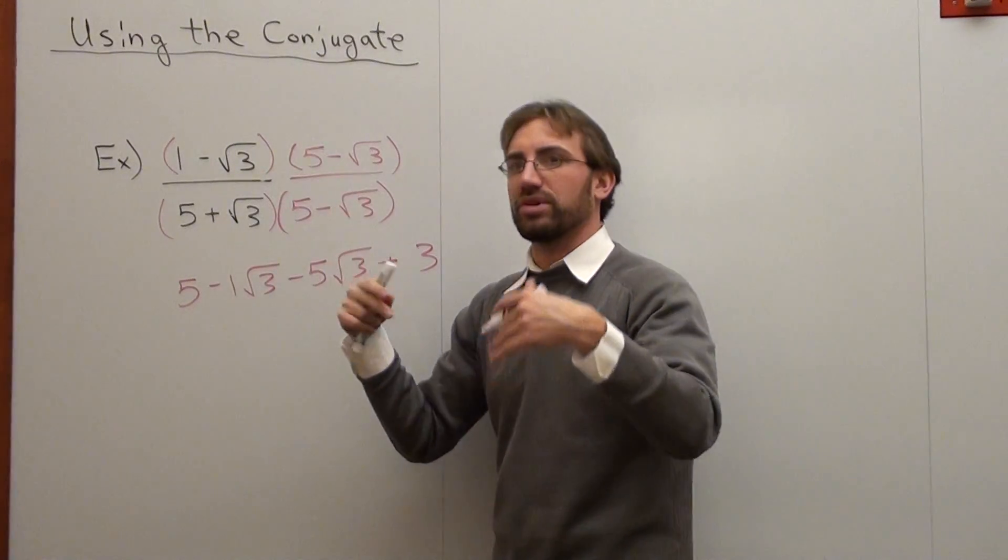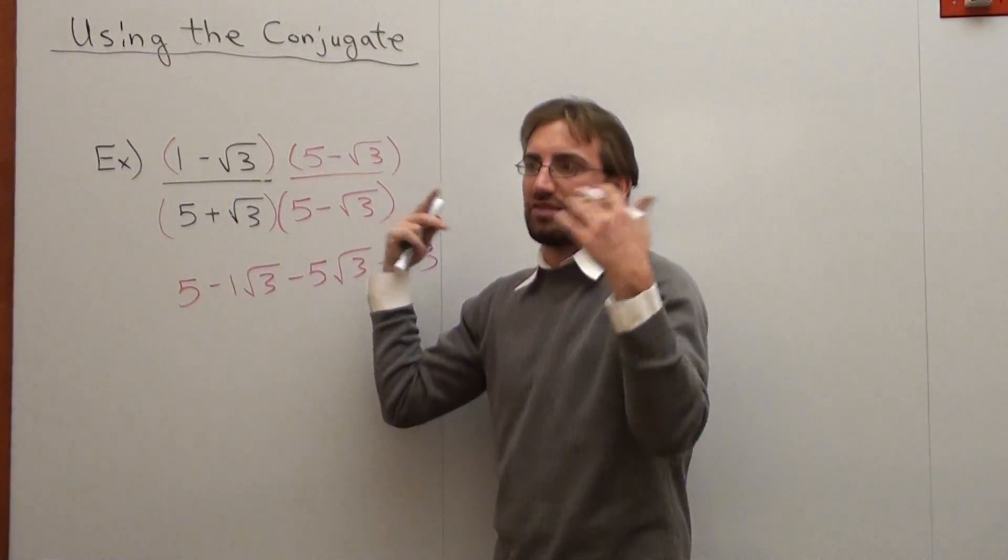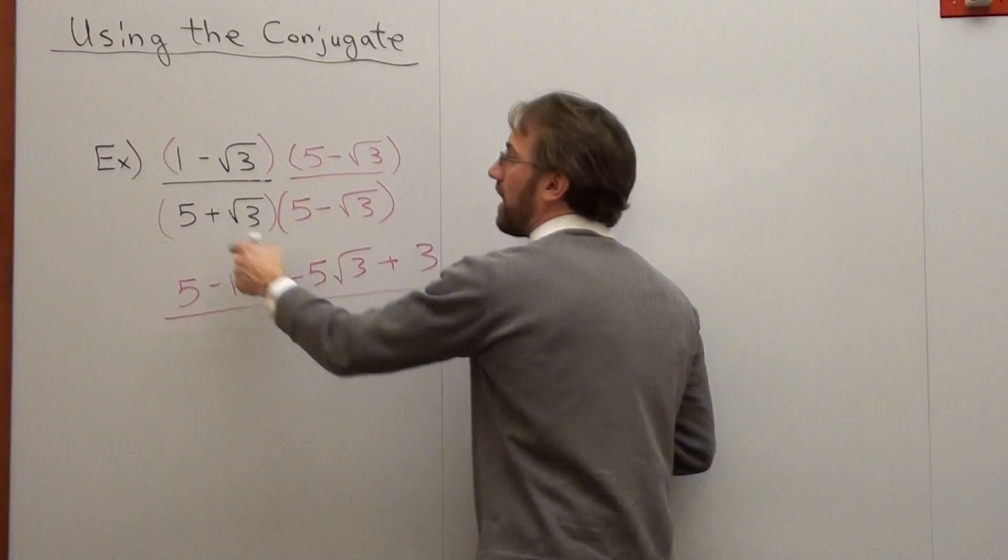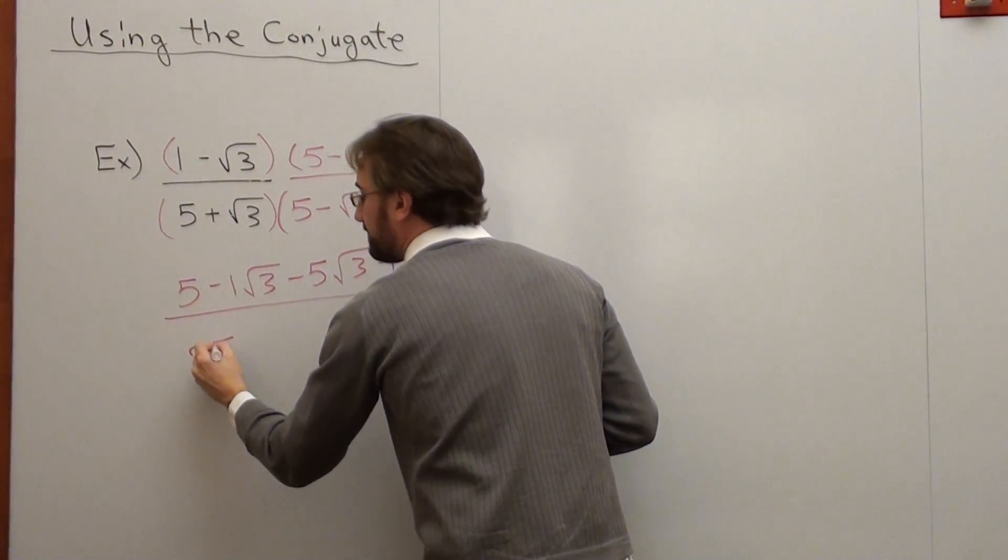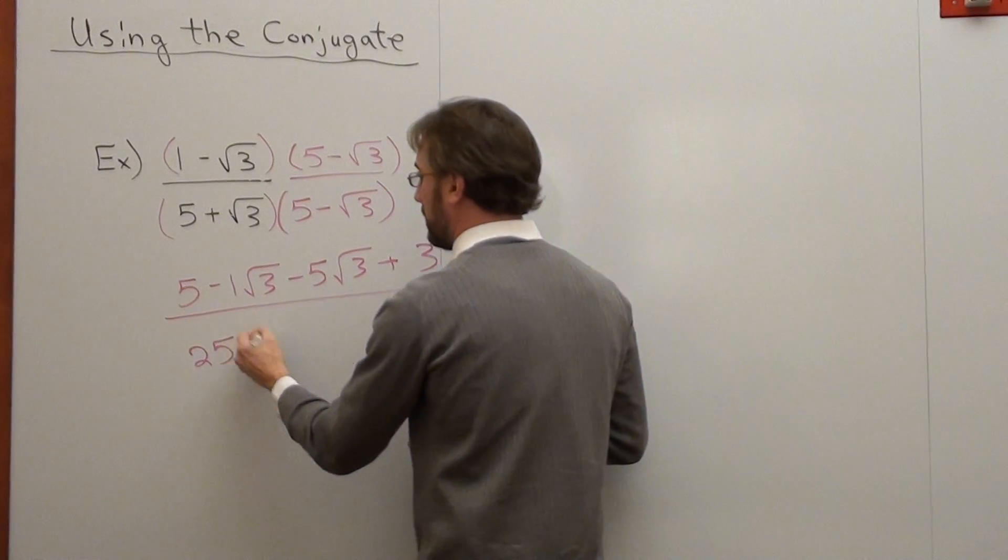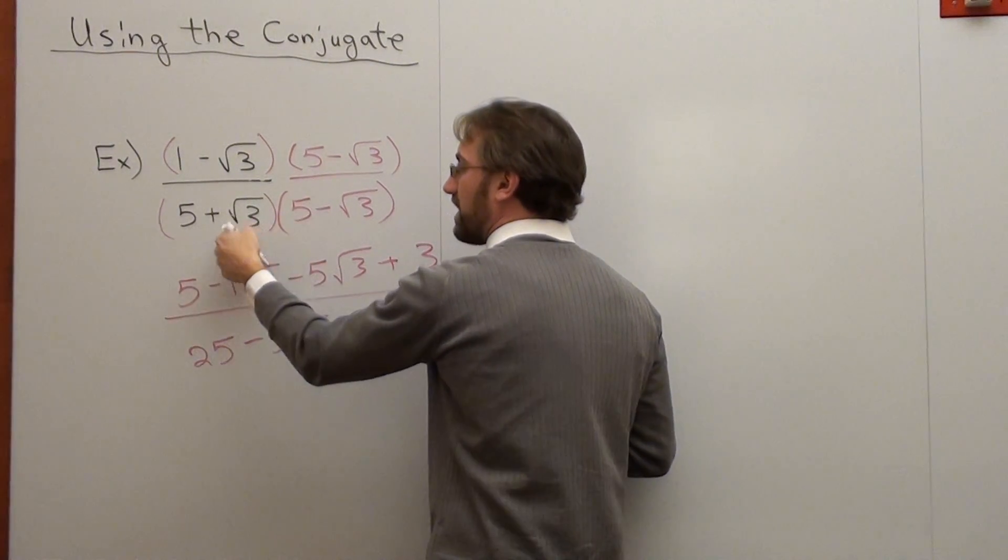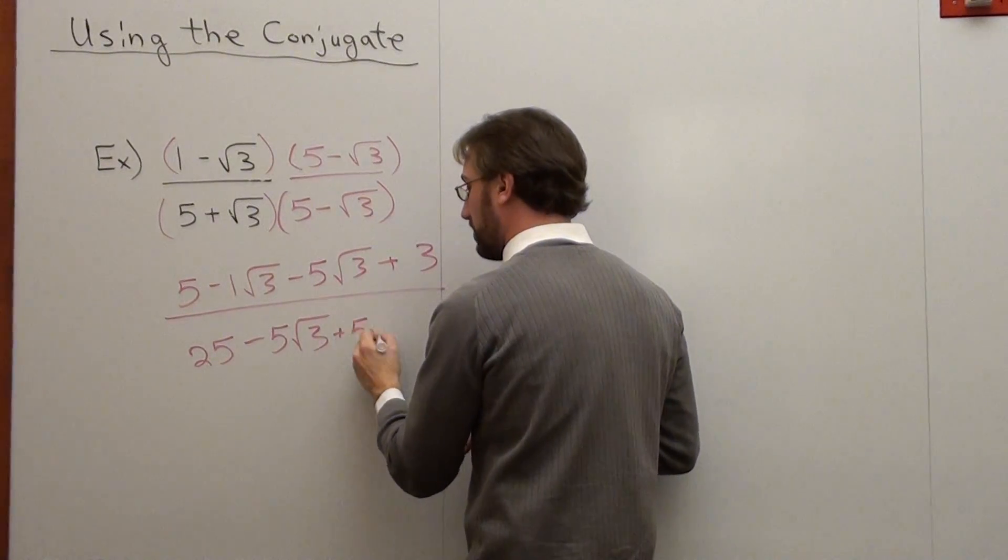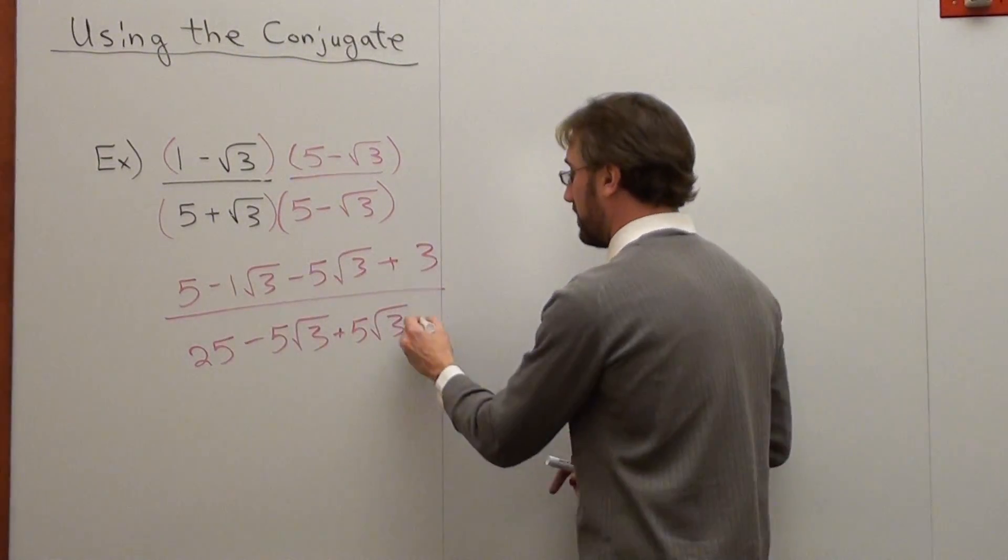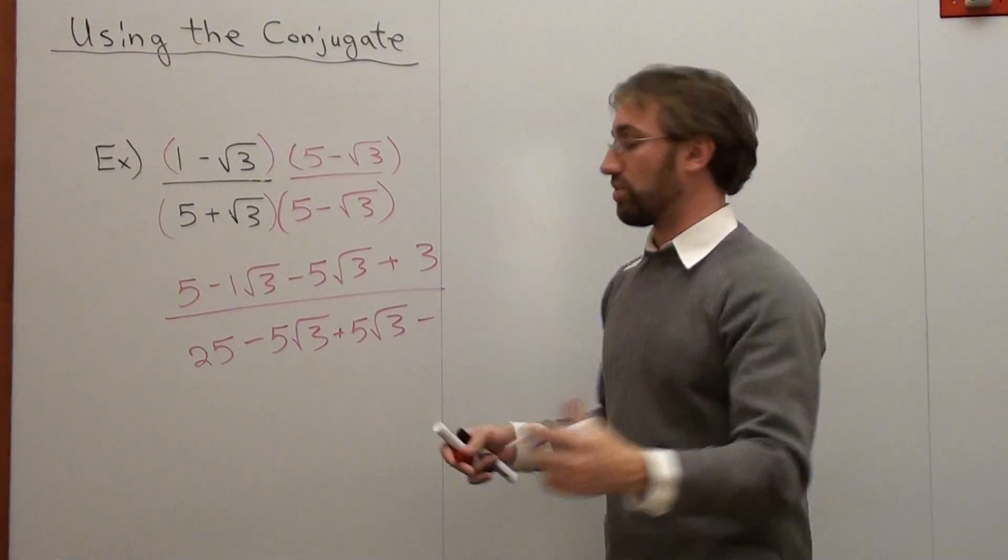So, this is square root 3 times square root 3 is square root 9. Square root 9 is 3. Or you just say, square root of a number times itself is just the number on the inside. So, over 5 times 5 is 25. 5 times negative square root 3 is negative 5 root 3. 5 times positive square root 3 is 5 square root 3. And a positive times a negative is negative. Square root 3 times square root 3 is square root 9, or just 3.